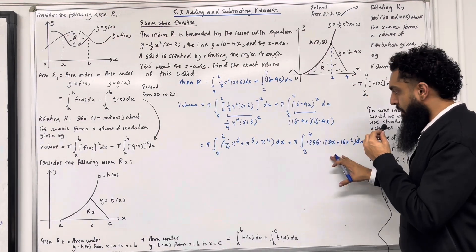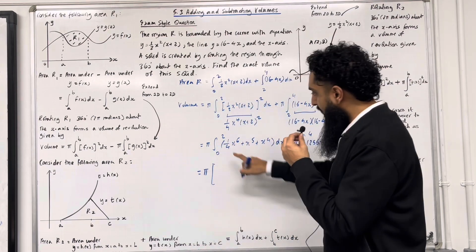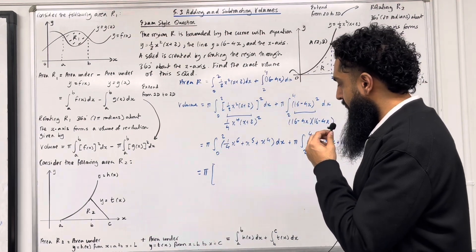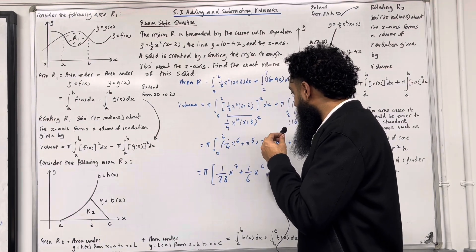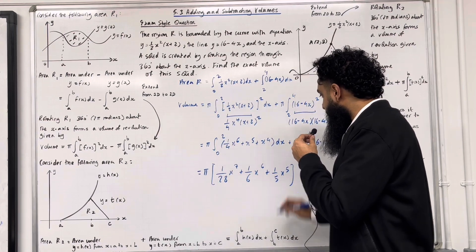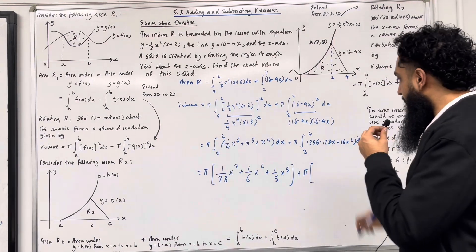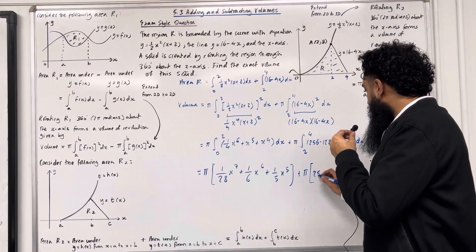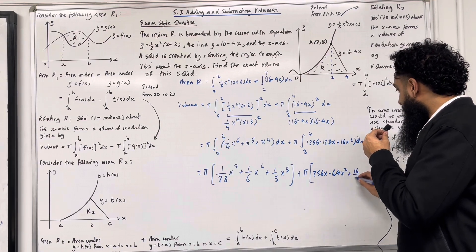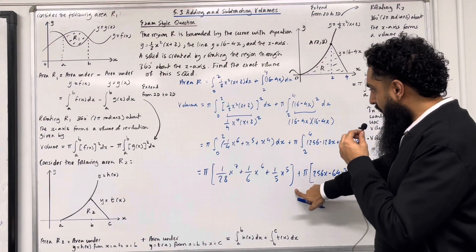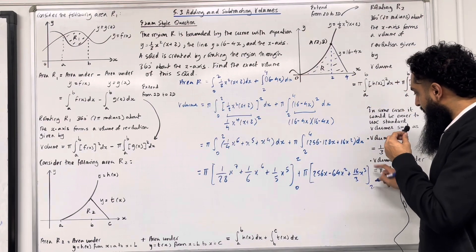Integrating term by term — add 1 to the power, divide by the new power — this equals π multiplied by [(1/28)x⁷ + (1/6)x⁶ + (1/5)x⁵], with lower limit 0 and upper limit 2. Plus π multiplied by [256x − 64x² + (16/3)x³], with lower limit 2 and upper limit 4.